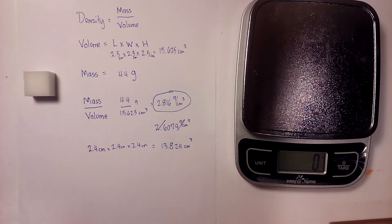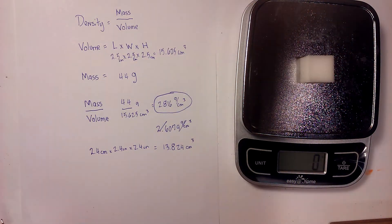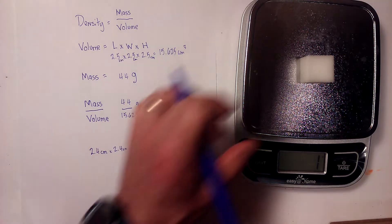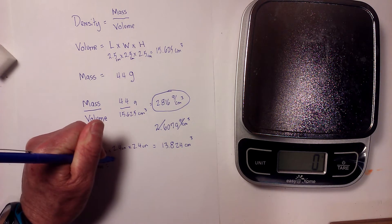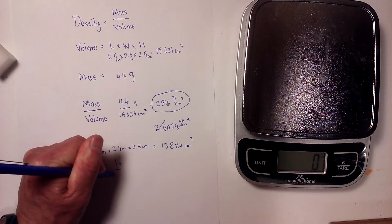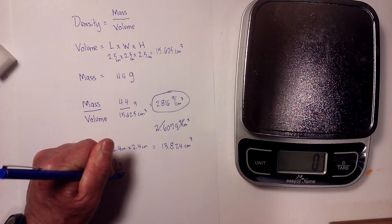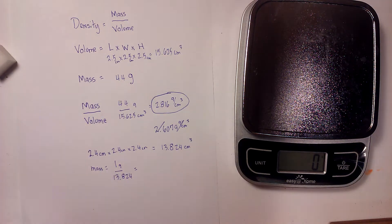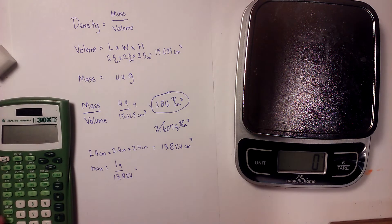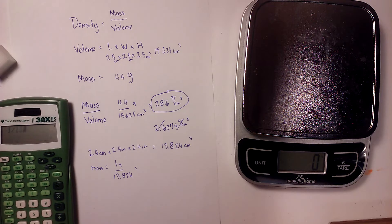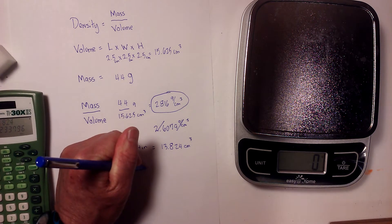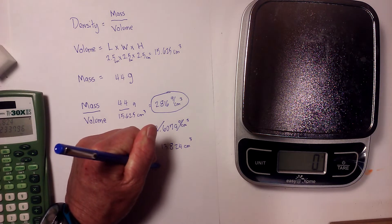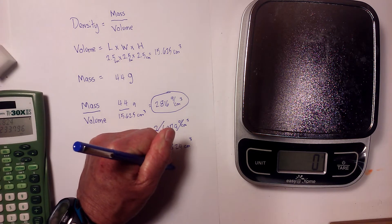Now I need to get the mass, so I'm going to place this on the scale and it looks like it is 1 gram. So I take mass divided by volume, 1 gram divided by 13.824, and that equals 0.0723 grams per centimeters cubed.